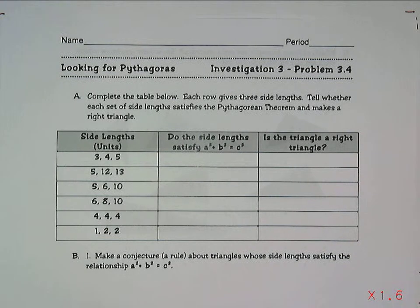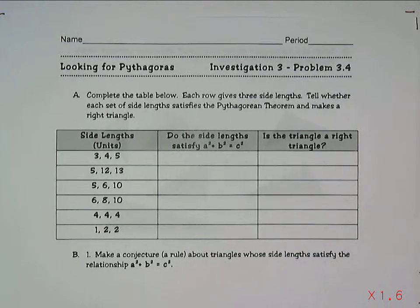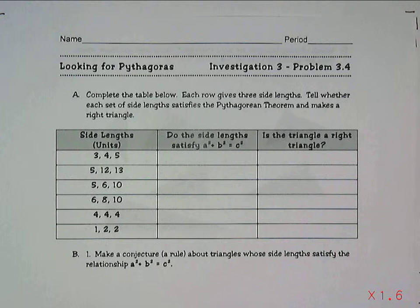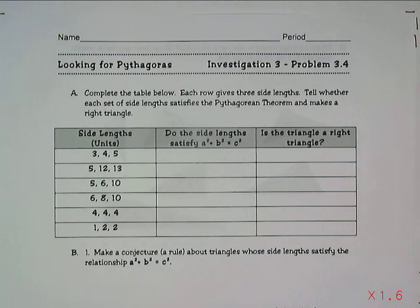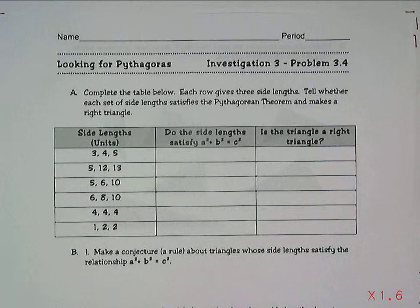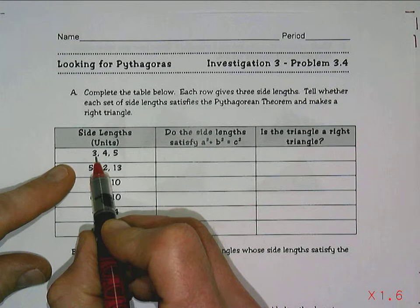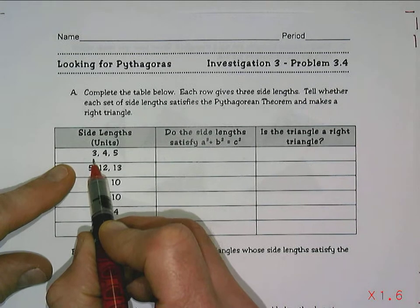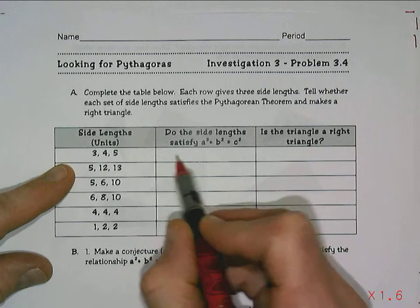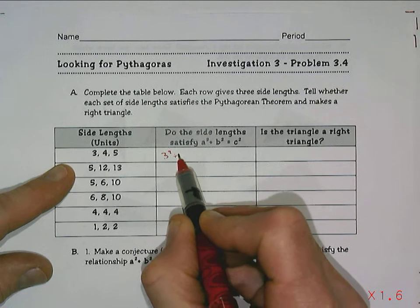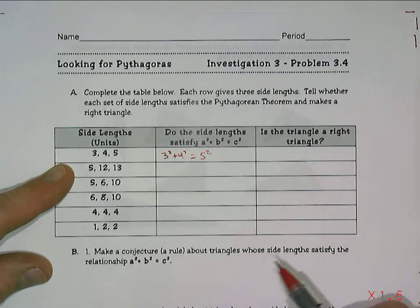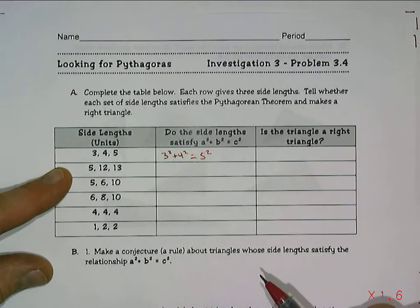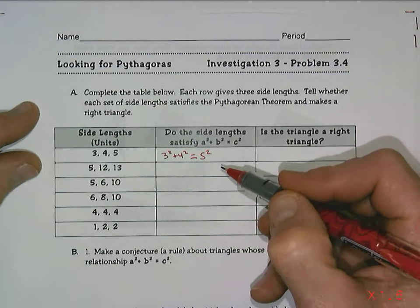In this final investigation for Problem 3.4, Investigation 3, we want to use the Pythagorean Theorem to prove whether a triangle is a right triangle or not. The idea is that if I can use these three numbers, 3 squared plus 4 squared, if that equals 5 squared, then this has to be a right triangle.